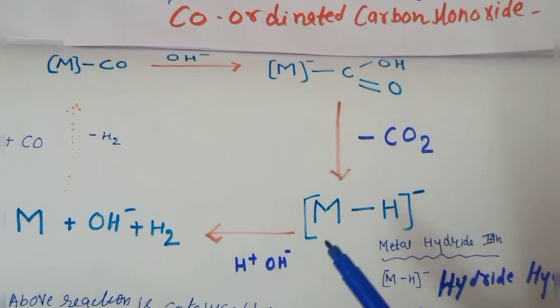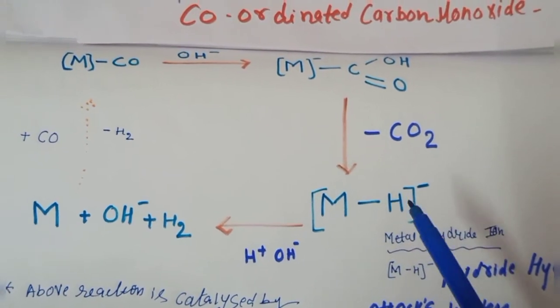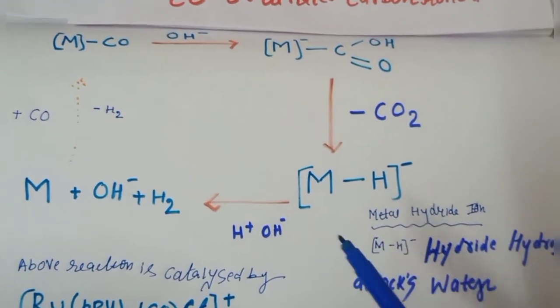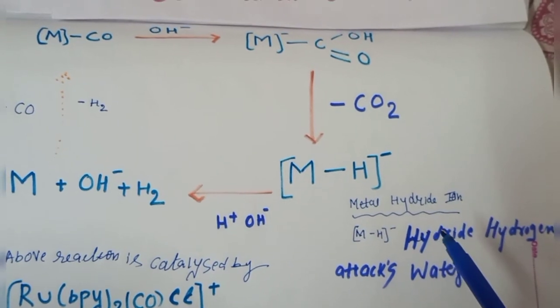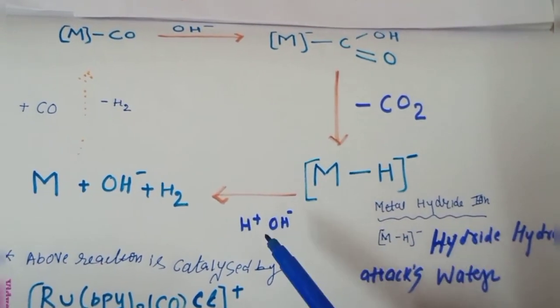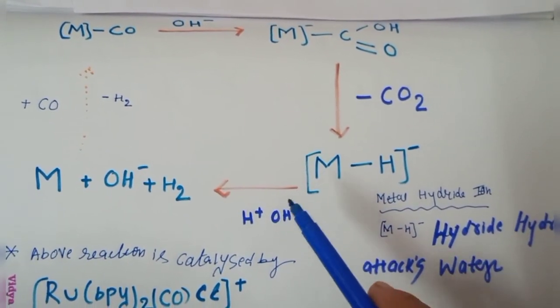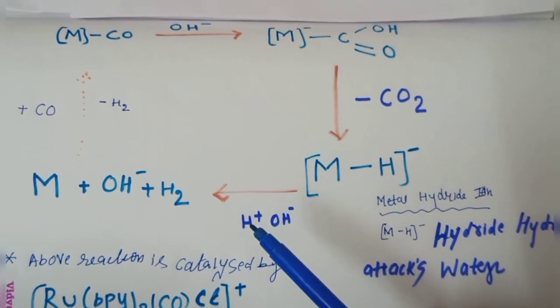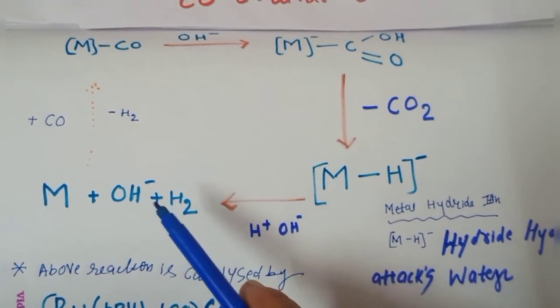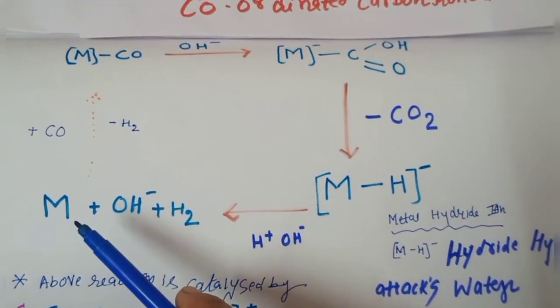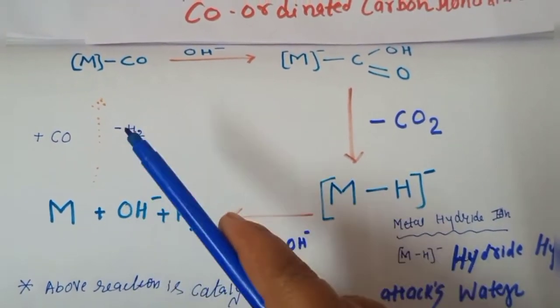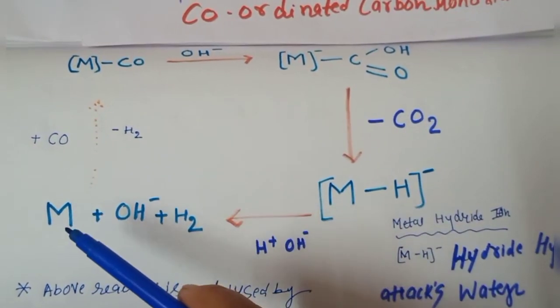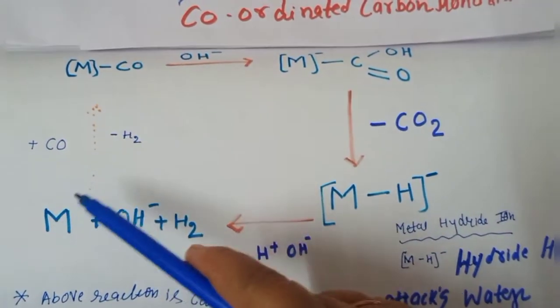This is an unstable species. Again what happens? This will react with water. This hydride hydrogen will attack the water. So again H+ and OH-. What will happen? This H will combine with another H+ to form H2, and this OH- will be eliminated, and our metal will also be free.